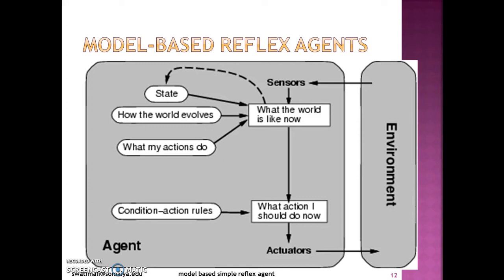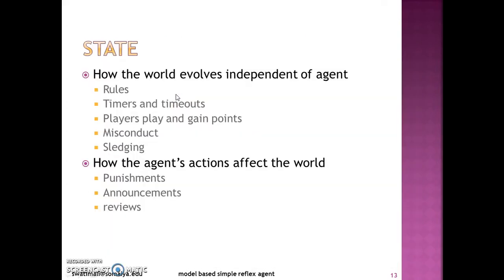Going ahead after the sensors is the state. The state defines how the world evolves independent of the agent and how the agent's actions affect the world. In this case, rules, timers and timeouts, and how players play and gain points, misconduct and sledging — these all happen without the agent. While punishments, announcements, and reviews are the part in which the agent will have its own contribution.